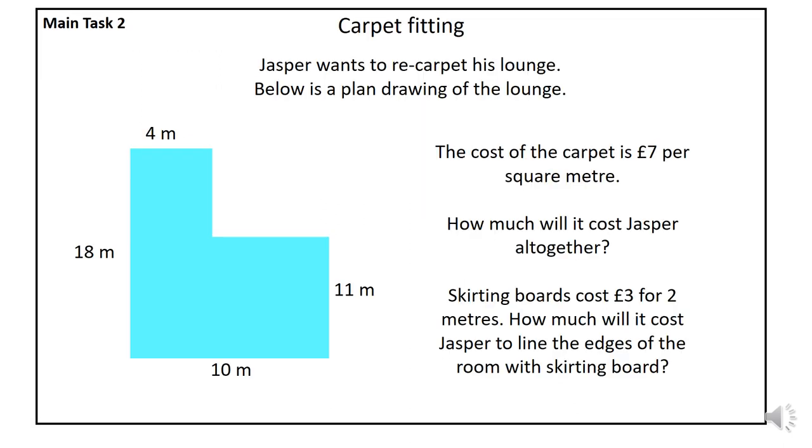Okay, now this is the second part of the main activity. Jasper wants to re-carpet his lounge and below is a planned drawing of the lounge. What you need to do is draw the lounge out with a pencil and a ruler. Obviously, put the correct lengths in. I would also find the two missing lengths and just put those in as well. Now, the cost of the carpet is £7 per square meter. How much will it cost Jasper altogether for the carpet?